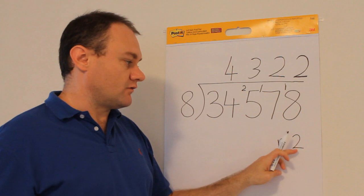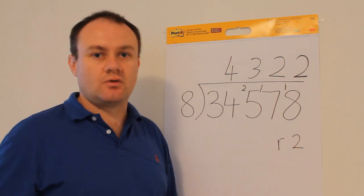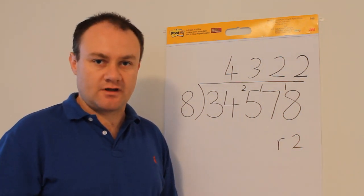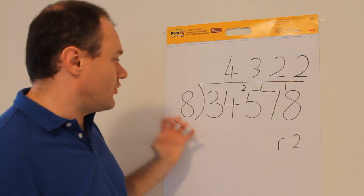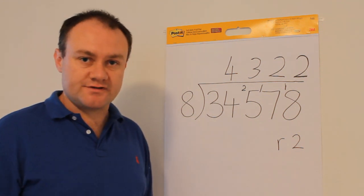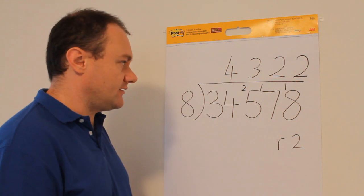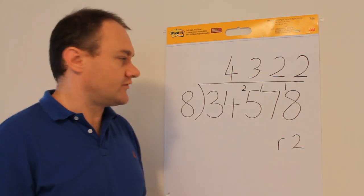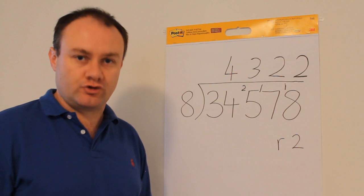You can do things like you can convert the remainder to a fraction or a decimal but I'll show you how to do that in a later video. For the time being, 34,578 divided by eight equals 4,322 with a remainder of two.